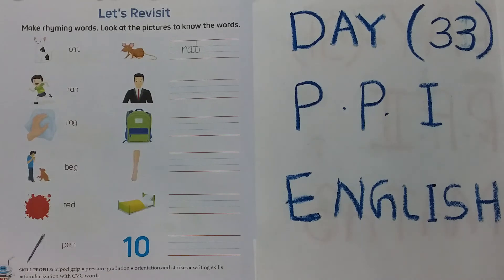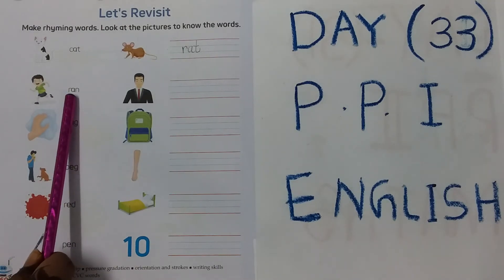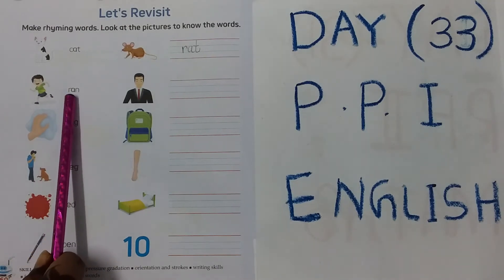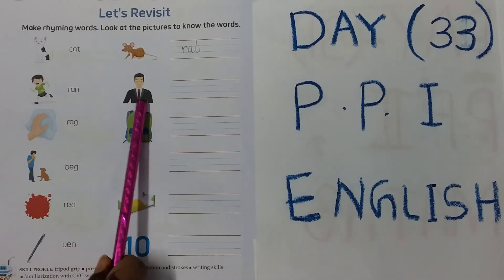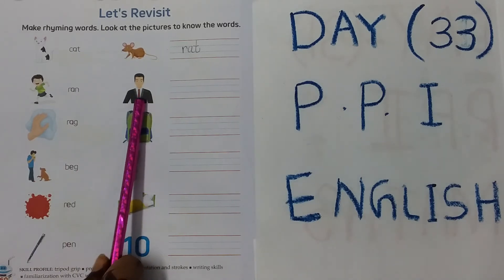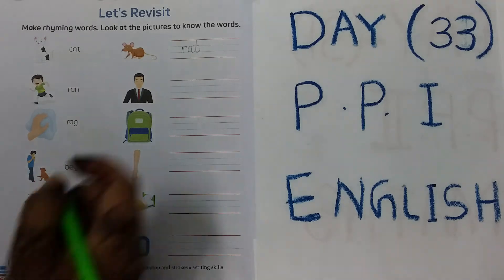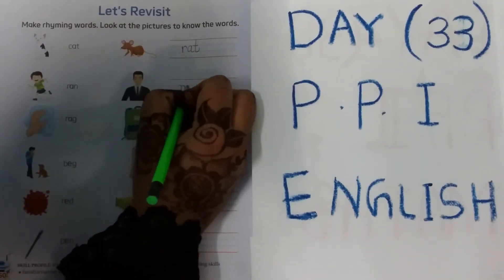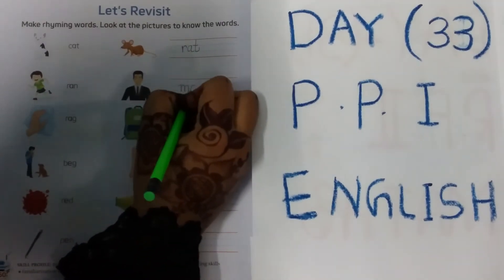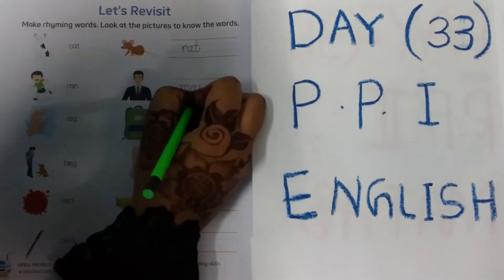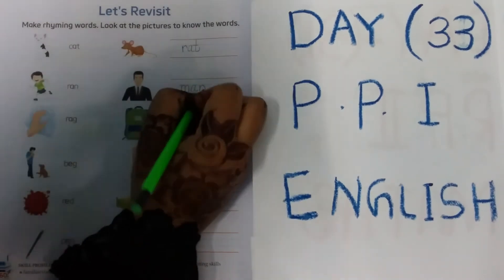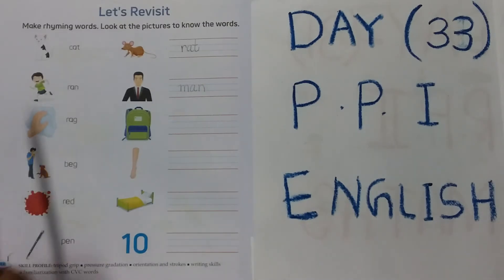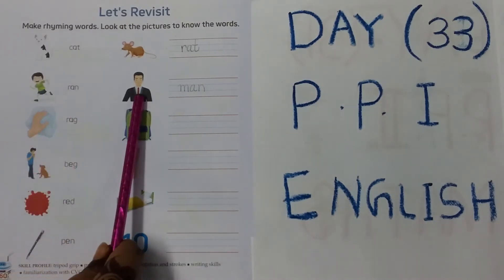Ran — R-A-N, Ran. So Ran and Man. The next picture is Man, so what's the spelling of Man? M-A-N, Man. Ran, Man — again it's an A-sound word.